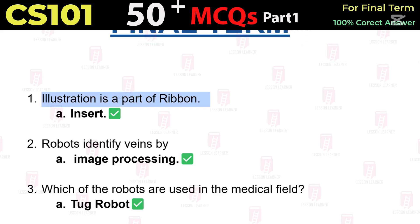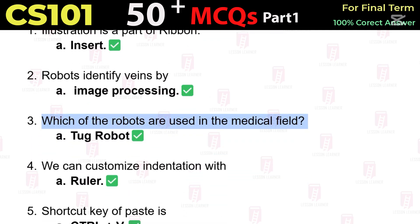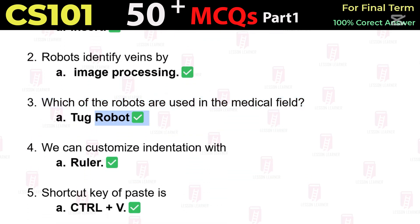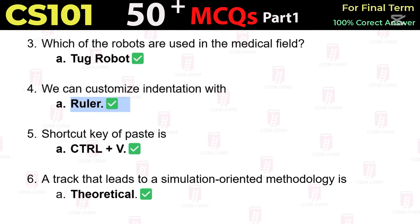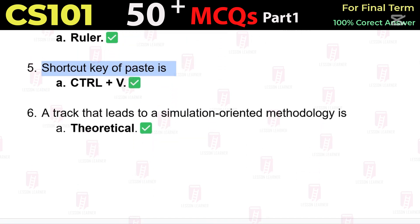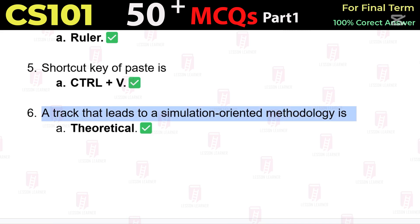Illustration is a part of the Insert ribbon. Robotics identify veins by image processing — which type of robots are used in the medical field? Tug robot. We can customize indentation with the ruler. Shortcut key of paste is CTRL+V.